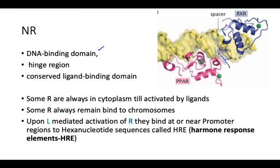The interaction of the nuclear receptor with DNA is mediated by sequence recognition. This sequence is generally called AGGTCA. This sequence recognition is mediated by the DNA binding domain proteins of a nuclear receptor. Upon ligand-mediated activation, receptors bind at or near promoter regions to this hexanucleotide sequence AGGTCA, and these are called hormone response elements.